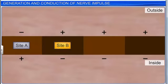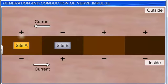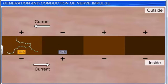At site B, the axon membrane has a positive charge on the outer surface and a negative charge on the inner surface. As a result, a current flows on the inner surface from site A to site B. On the outer surface, a current flows from site B to site A, to complete the circuit of current flow. This reverses the polarity at the site and an action potential is generated at site B. Thus, the impulse generated at site A arrives at site B.